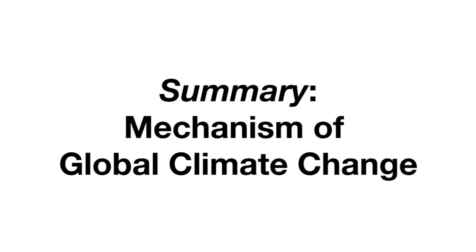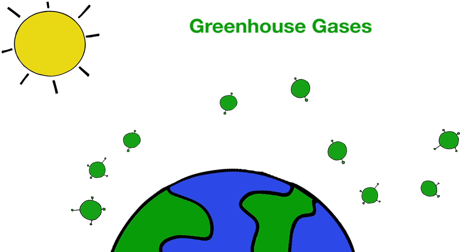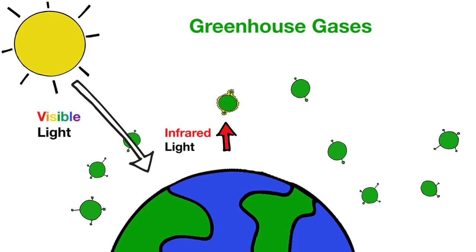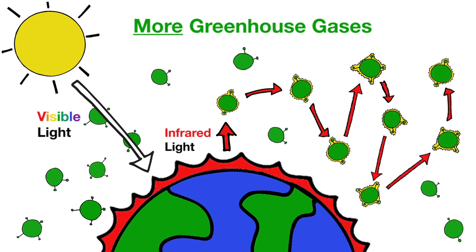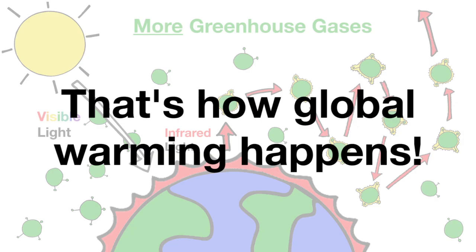To wrap up, we'll quickly summarize the mechanism of global climate change. Earth transforms sunlight's visible energy into infrared light, and infrared energy leaves Earth slowly because it's absorbed by greenhouse gases. As people produce more greenhouse gases, energy leaves Earth even more slowly, raising Earth's temperature even more than it has already gone up. That's how global warming happens.